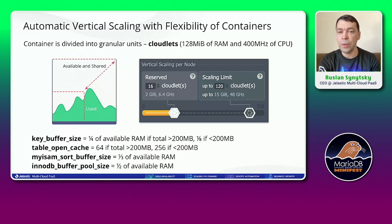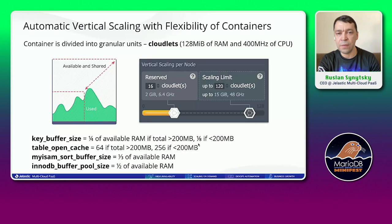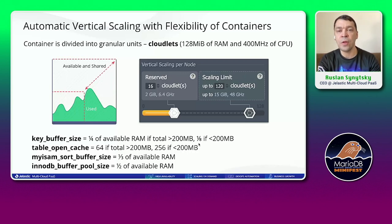We also provide additional automation reconfiguring parameters such as key buffers and caches. After you adjust the scaling limit, we also adjust the MariaDB instance — otherwise MariaDB will not be able to utilize all the available resources. We do it automatically for you. You can switch off this automation and configure manually, but in the majority of cases it works just fine.